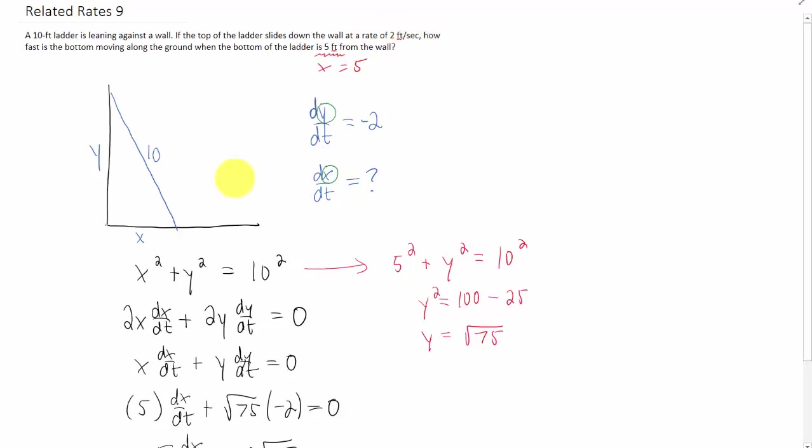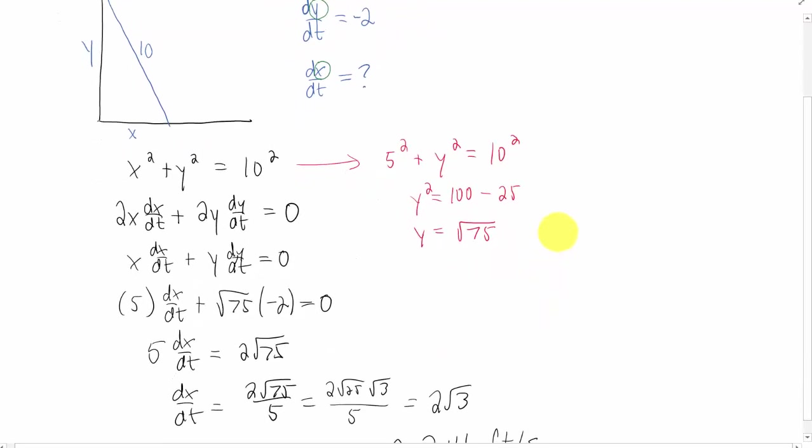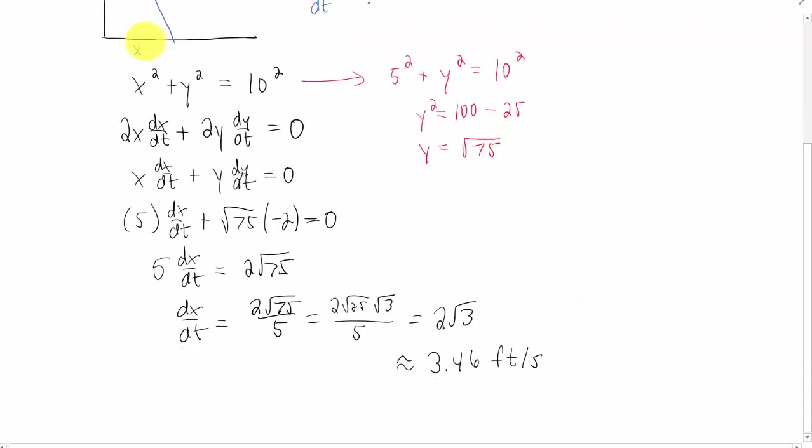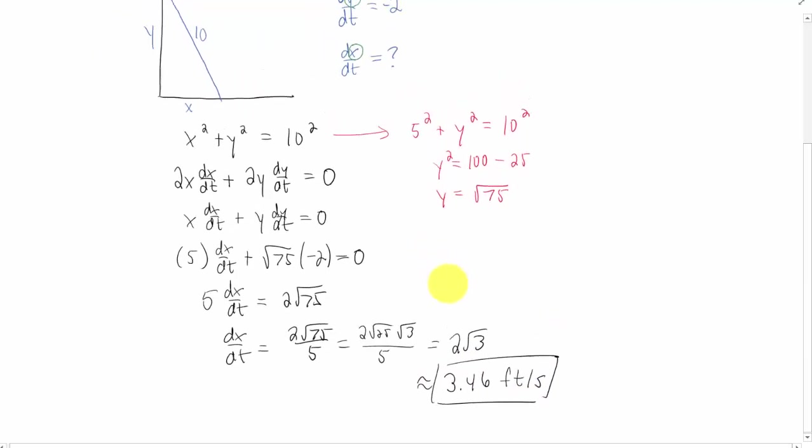Yes, we're dealing with feet per second. I think 3.46 is a number that is reasonable. It's positive because the base of this ladder is moving away from the wall. That's expanding x, making x bigger. So I think that answer looks great, and I think we're finished.